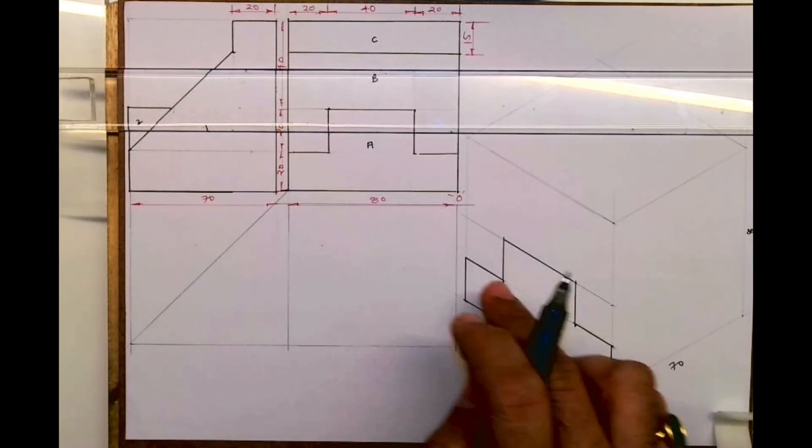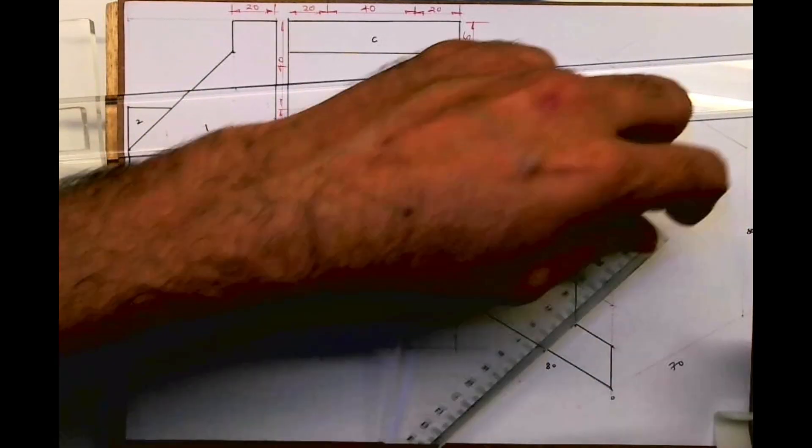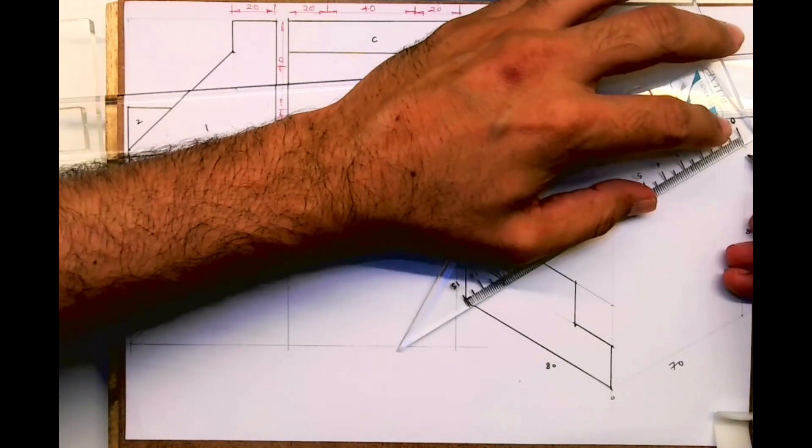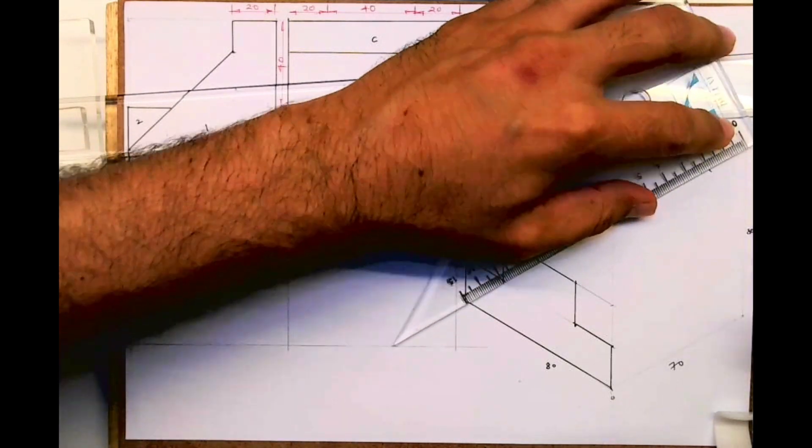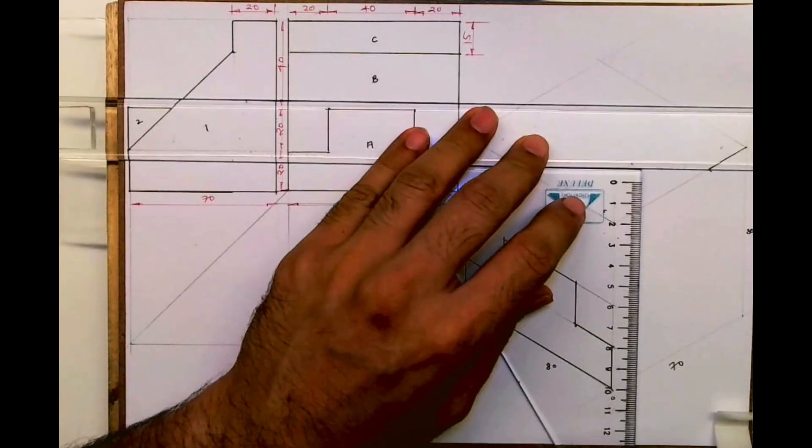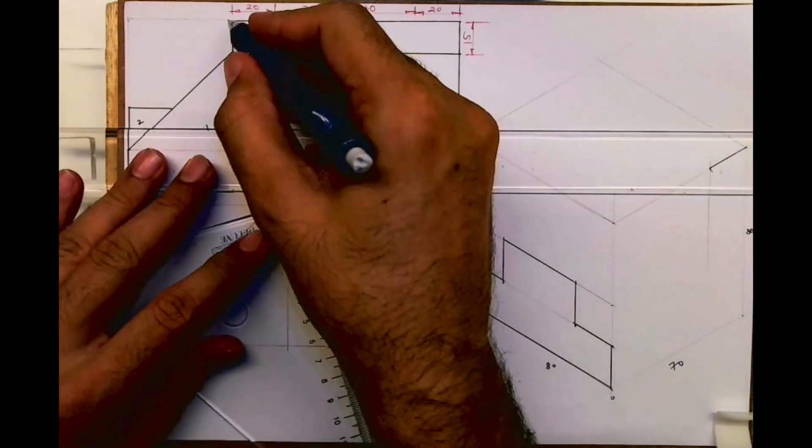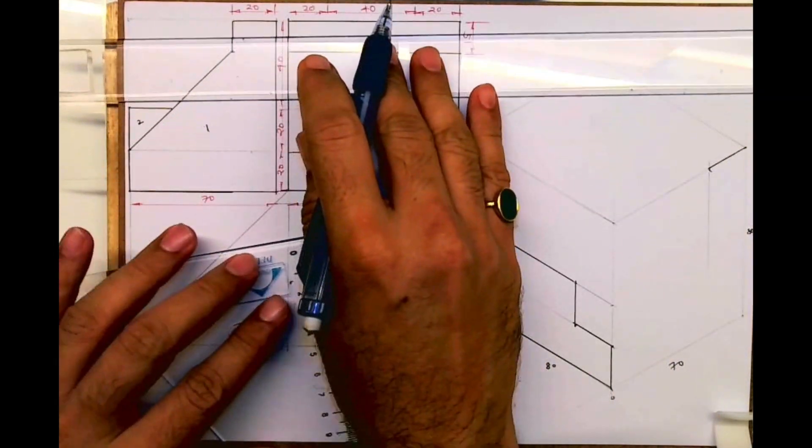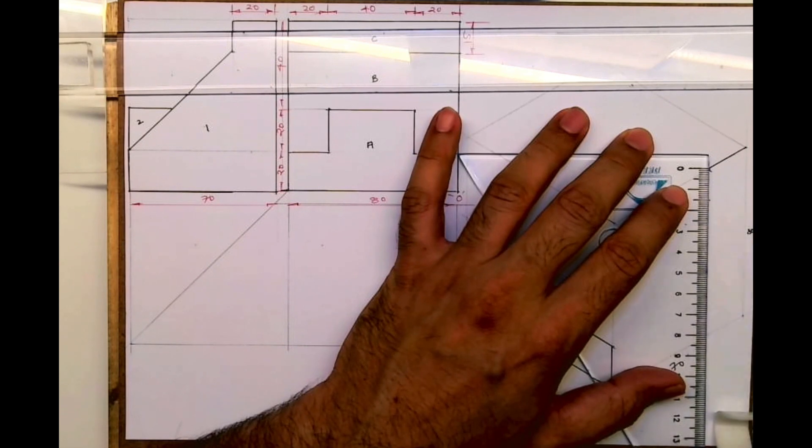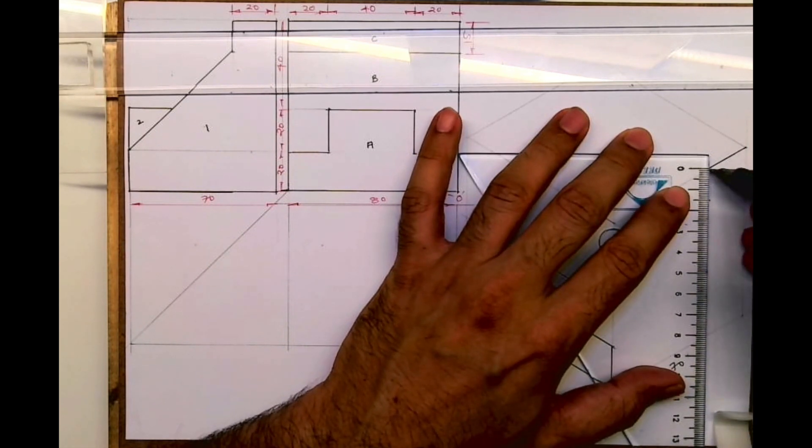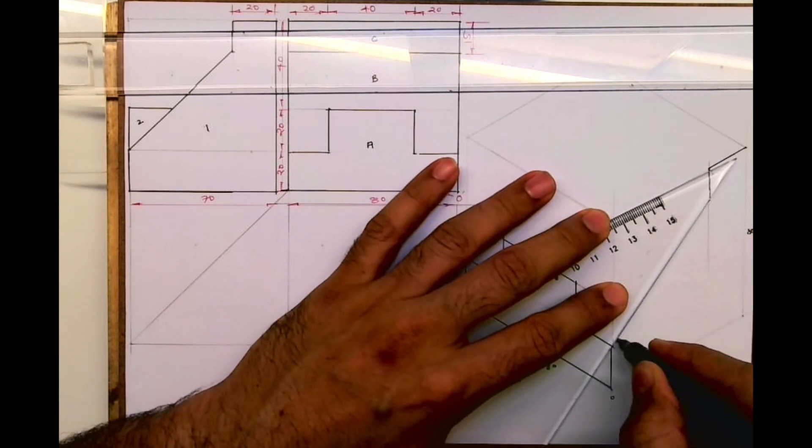So we are done with part A. Now if you see part one, we'll draw part one. We'll take 20 from here, then we'll go down by 15, then we'll go down by 15, then you draw the slope.